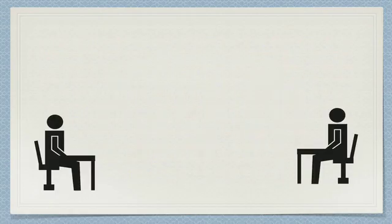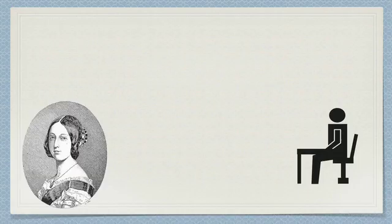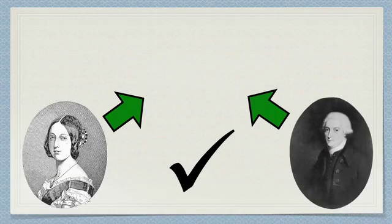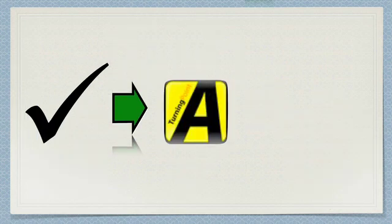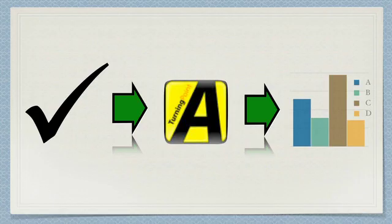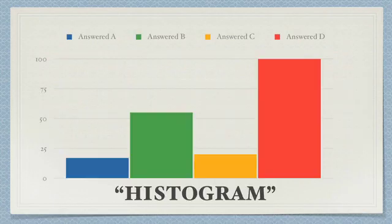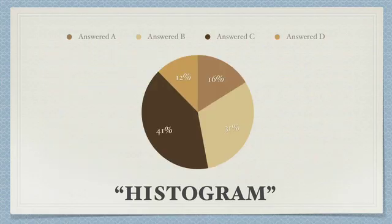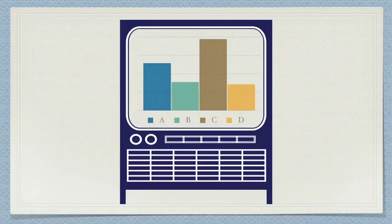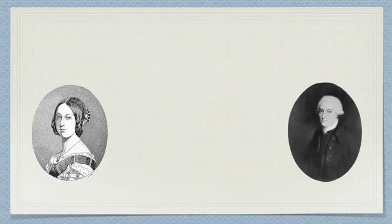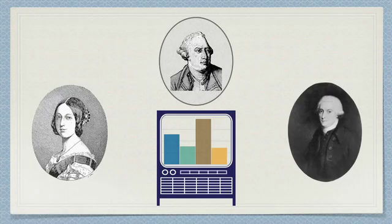In this way, students in Victoria and Vancouver send their answers to an instructor who's in Prince George. The answers all go through software, which interprets the results, creating a histogram. The histogram is like a graph showing the distribution of the students' answers, and it gets displayed on the lecture theatre screens.